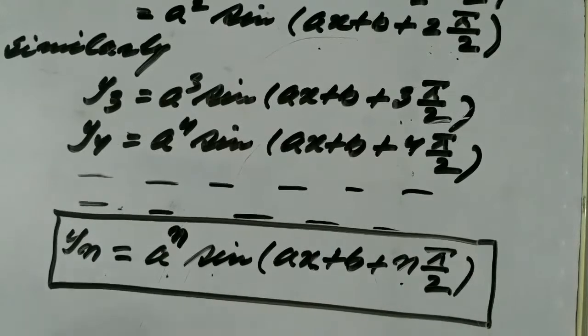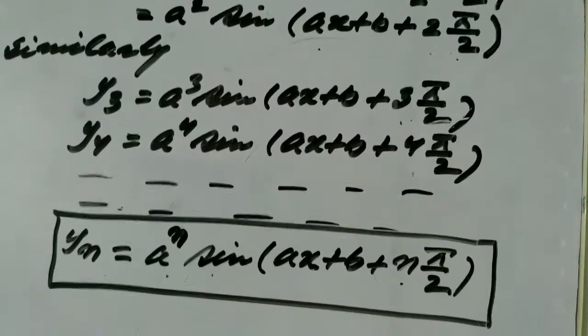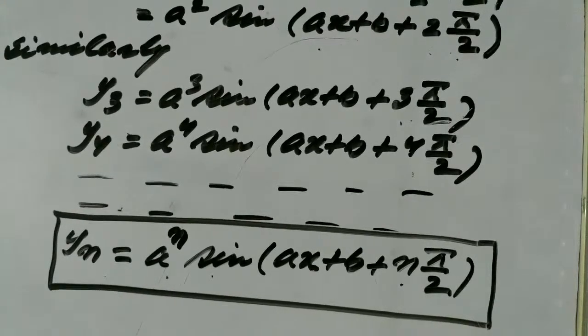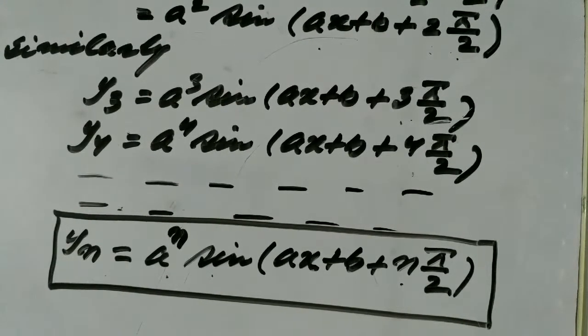This process is called the process of analogy. This is how we find the nth derivative of a function.